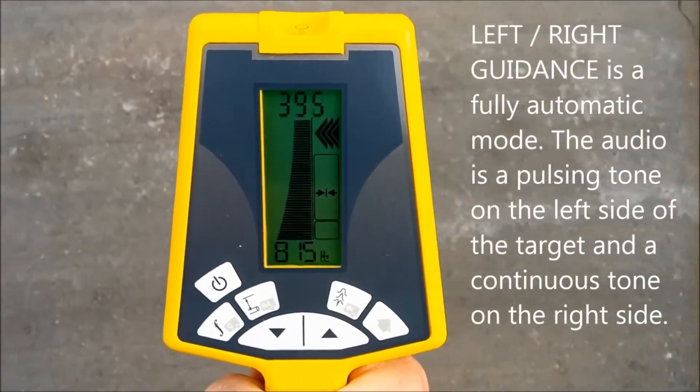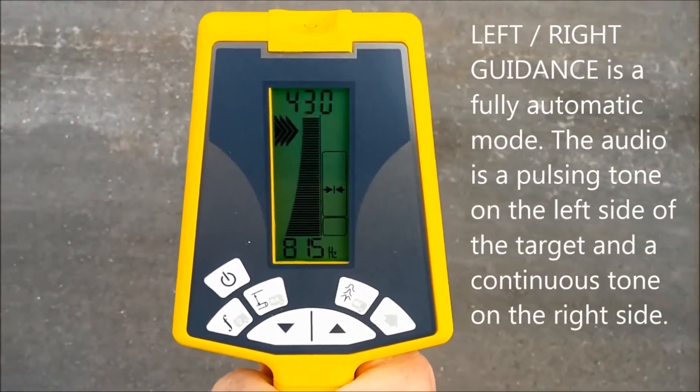Guidance mode offers a pulsing tone on the left side of the target and a continuous tone on the right side.